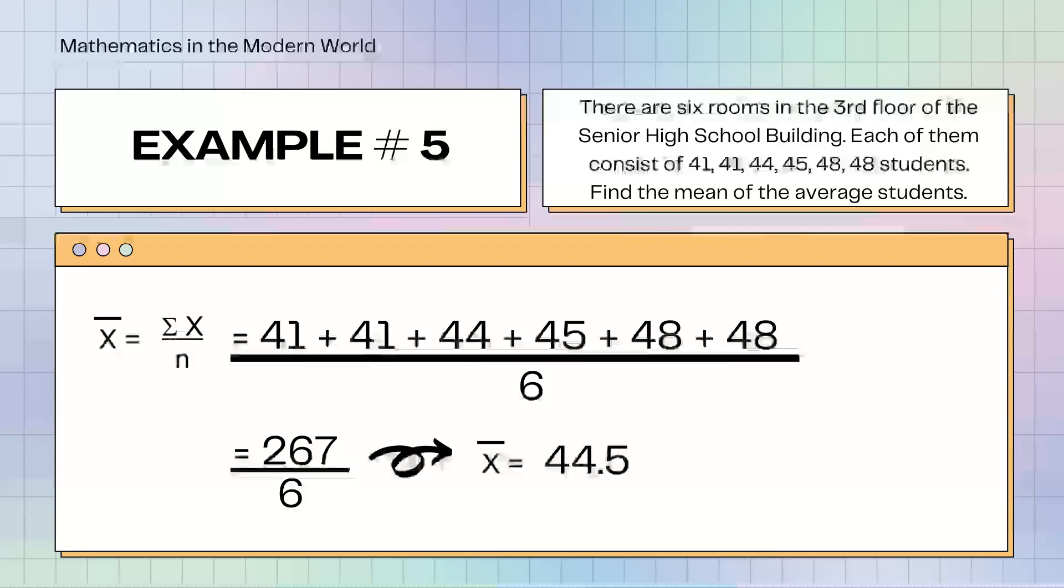Example number 5. There are 6 rooms in the 3rd floor of the senior high school building. Each of them consist of 41, 41, 44, 45, 48, 48 students. I-add natin yung population nung 6 na classrooms. It will be 267 divided by 6. Therefore, 44.5 is the mean average of students in the senior high school building 3rd floor.